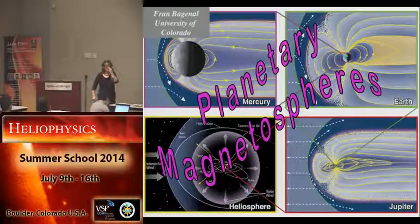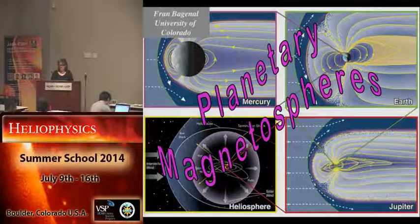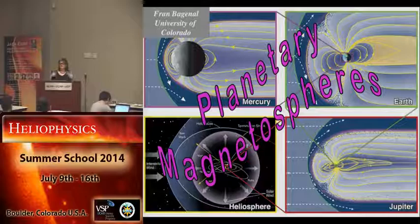I'm going to talk about magnetospheres in general, with the Earth as a specific example that we've studied in the most detail. But actually the Earth is the more complicated one, partly because we know more about it, so therefore it seems more complicated, but also because it is actually a little bit more complicated in terms of dynamics and structure than some of the other ones.